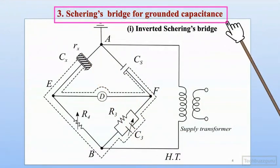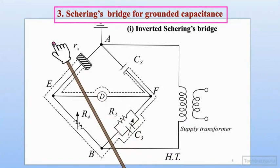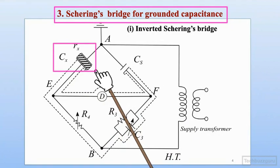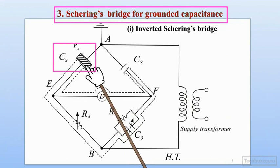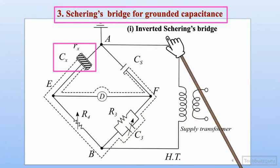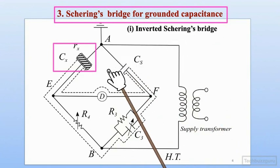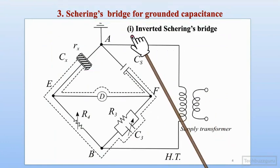The first configuration is the Schering bridge for grounded capacitance. The unknown element to be measured represents a grounded capacitance type of electrical apparatus - maybe a cable which is grounded, or a transformer bushing mounted on the transformer tank with its flanges connected to ground. Various methods are adopted to measure this kind of scenario and to minimize stray ground capacitances.